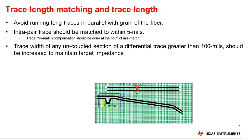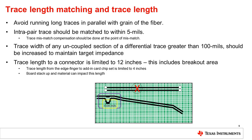The PCIe Gen 4 specification limits a channel to a maximum of 28 dB of channel loss. In a PCIe link, there is loss associated with the connectors, the vias, and the CPU or endpoint packaging. Assuming a given trace has a loss of 1.1 dB per inch, this means we are limited to a maximum length of about 16 inches of PCB trace.